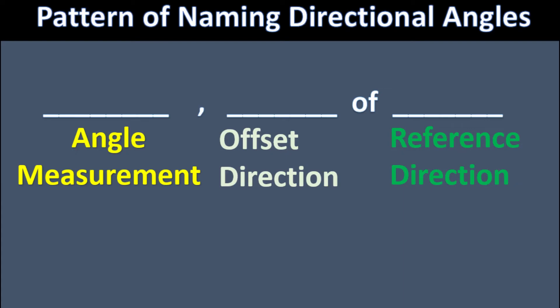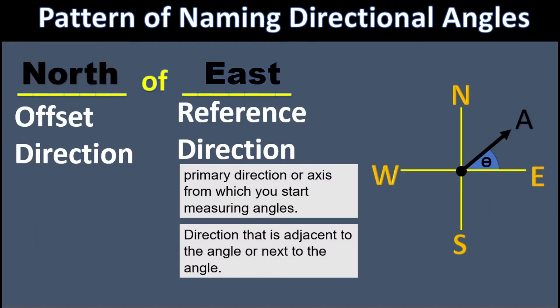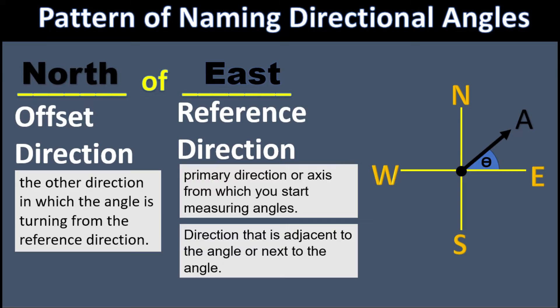We follow this pattern in naming directional angles. First is the angle measurement, followed by its direction, where we name the offset direction first followed by the reference direction — for example, 30 degrees north of east. The reference direction is the primary direction where the angle is adjacent to, and the offset direction is the other direction in which the angle is turning to.